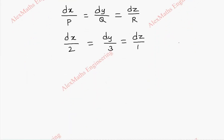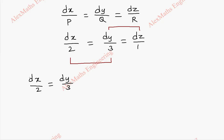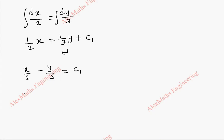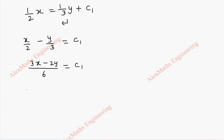Now taking two terms at a time, first dx by 2 equal to dy by 3. On integration this gives x by 2 equal to y by 3 plus constant c1. Taking terms to one side: x by 2 minus y by 3 equal to c1. Taking LCM as 6, this becomes 3x minus 2y equal to 6c1, which we write as 3x minus 2y equal to c1.